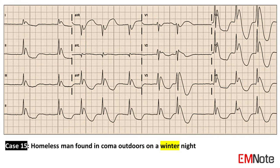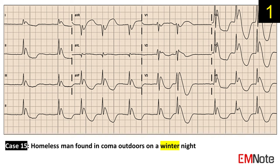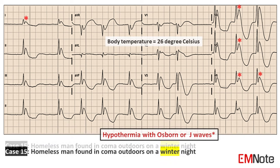Case 15: The patient is a homeless man found in a coma outdoors on a winter night. The ECG shows bradycardia with Osborne waves or J waves. These ECG findings are diagnostic of hypothermia.